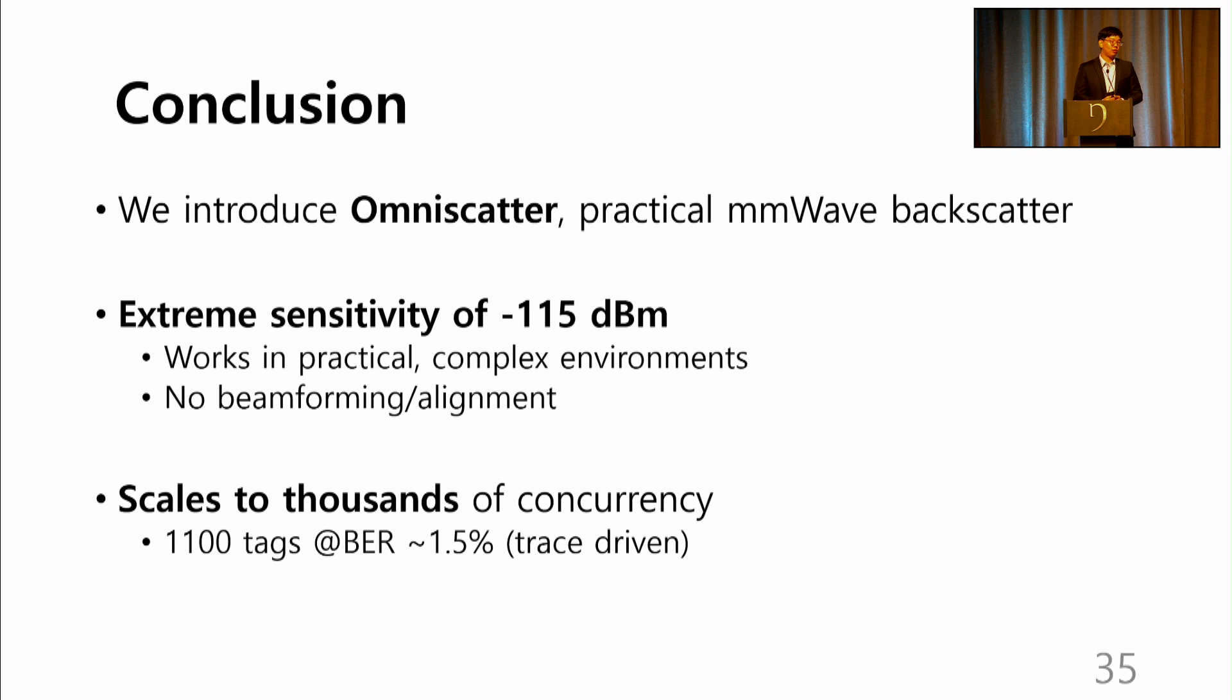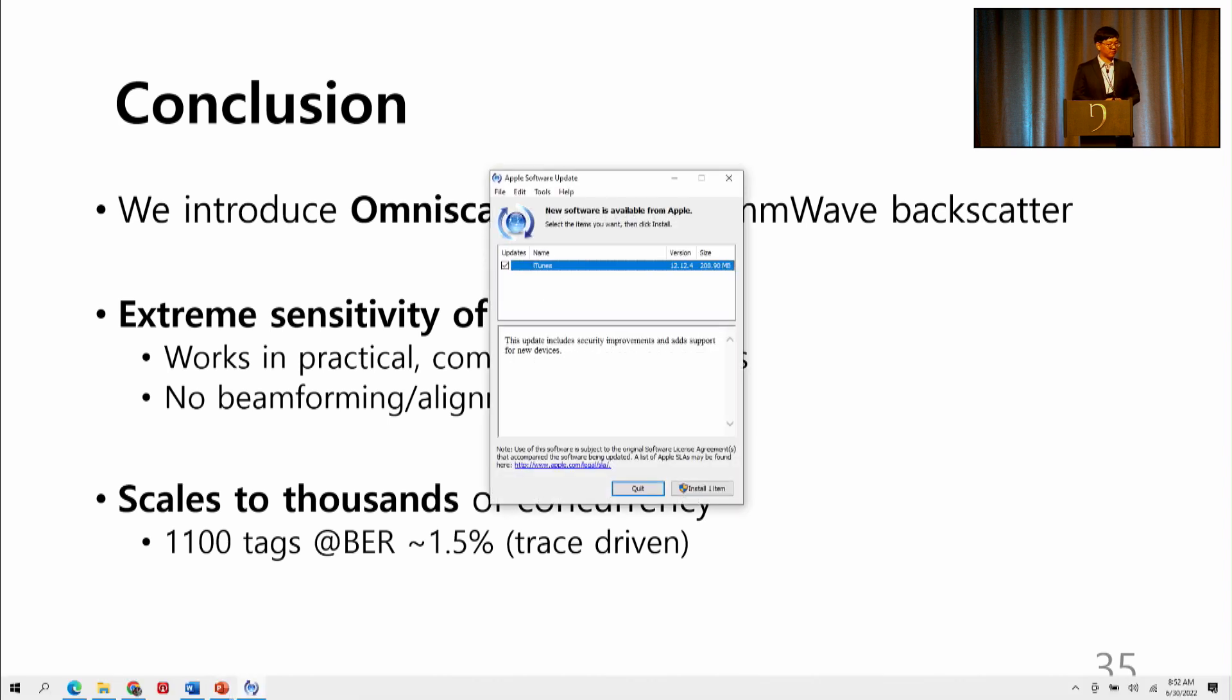In summary, we propose Omniscatter, a practical millimeter wave backscatter for massive connectivity. Our design achieves extreme sensitivity of minus 115 dBm, which efficiently mitigates the high loss of the millimeter wave backscatter. Also, Omniscatter scales to thousands of concurrent communications. For more details, please refer to our paper. Thank you.